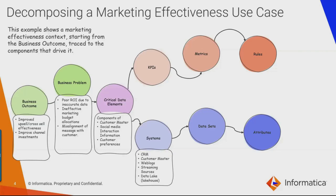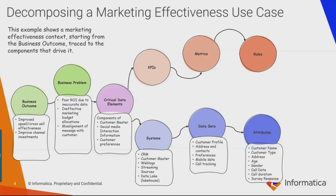We then look at the systems where such data items could live, such as the data lake, or from where the data flows into the data lake — systems like a CRM, a master data management system, web logs, or streaming sources. Next, we look at the data structures within those systems, such as tables or files that contain specific customer information like customer preferences, addresses, and contacts. These are the physical or conceptual datasets we are interested in. Beneath the datasets you have the attributes — such as customer name, address, age, gender — that may be directly used to infer things like customer segmentation or measuring campaign effectiveness for targeted customer segments.